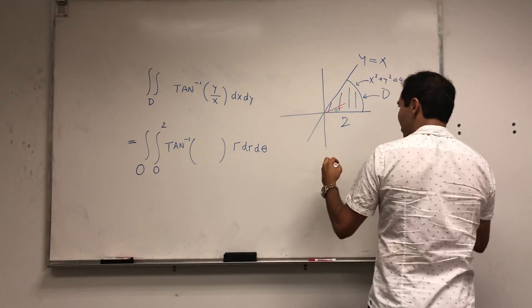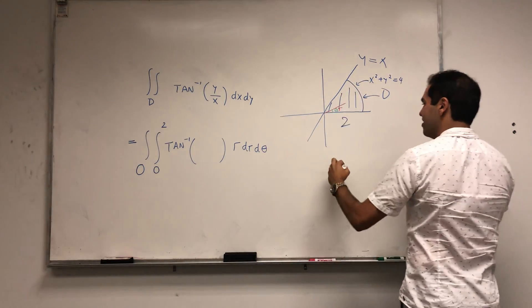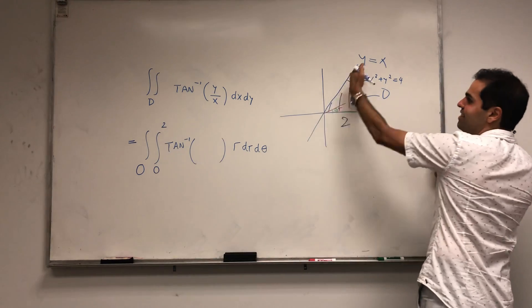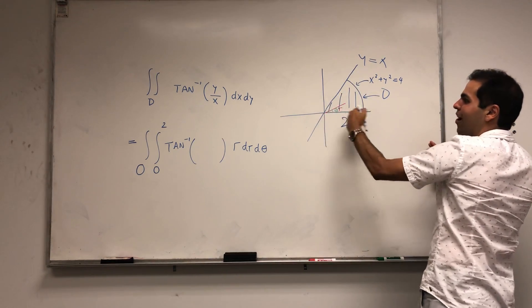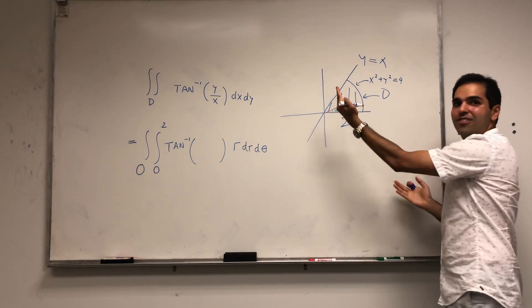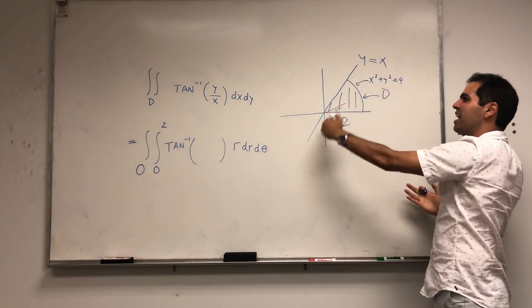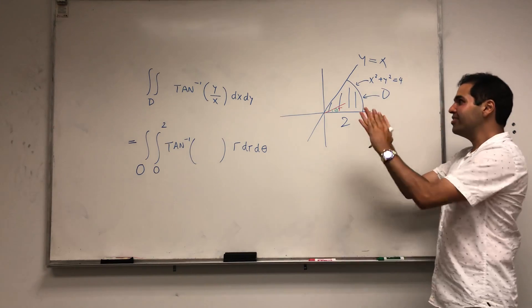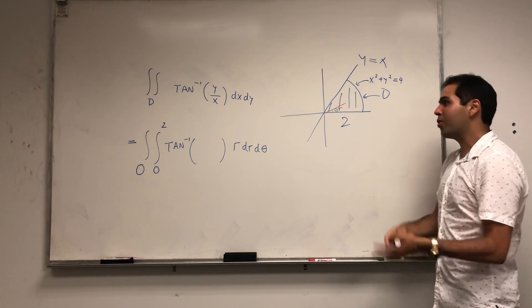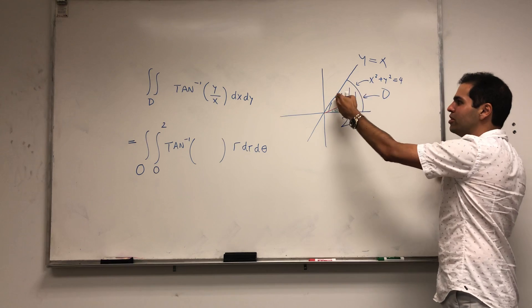And the angle could go from 0 to whatever that angle is, so this is 0 to something. Well now let's try to determine that something. The easiest thing to realize is this is the first quadrant, which corresponds to pi over 2, and here we're cutting the first quadrant in half.